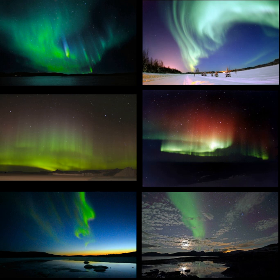Most auroras occur in a band known as the auroral zone, which is typically 3 to 6 degrees wide in latitude and between 10 and 20 degrees from the geomagnetic poles at all local times or longitudes, most clearly seen at night against a dark sky. A region that currently displays an aurora is called the auroral oval, a band displaced towards the night side of the Earth.